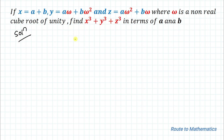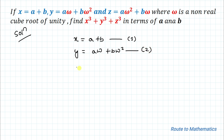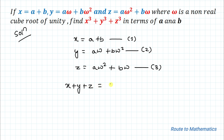We have x equals a plus b — that is equation 1. y equals a·omega plus b·omega squared — equation 2. And z equals a·omega squared plus b·omega — equation 3. In the next step, let's add the three equations. So we have x plus y plus z equals a plus b plus a·omega plus b·omega squared plus a·omega squared plus b·omega.